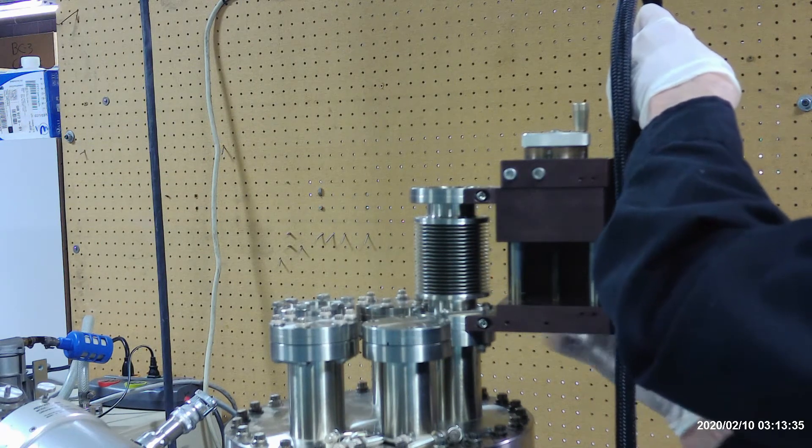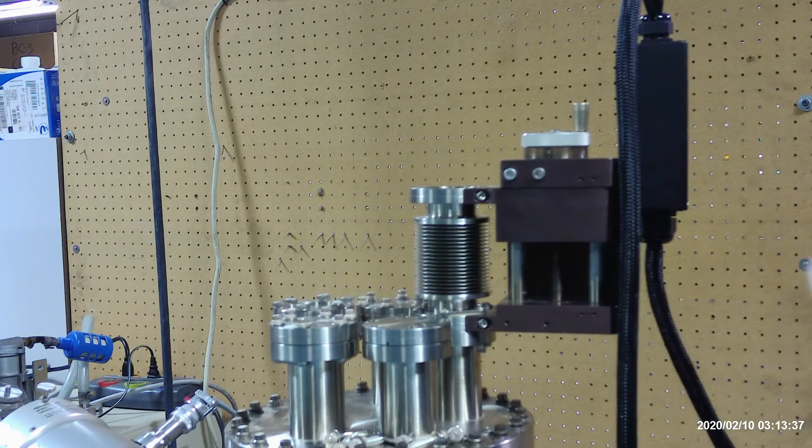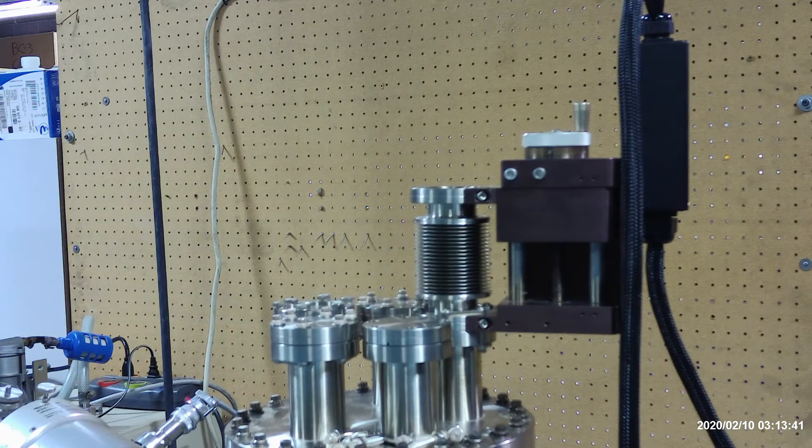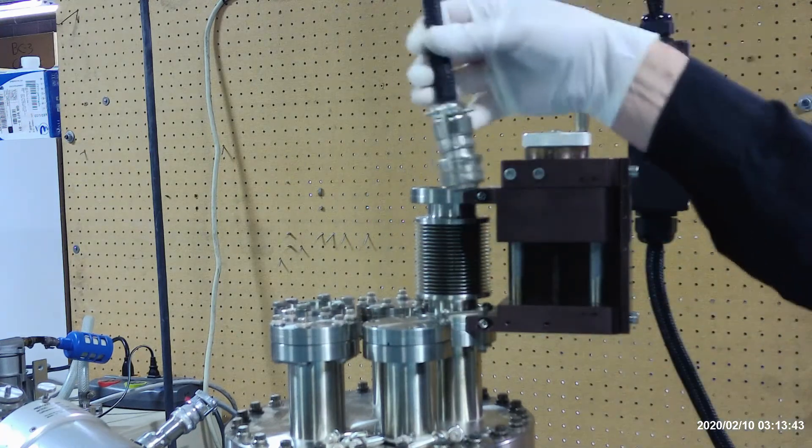I'm tightening the bolt on the back. Now the preamp is attached to the Z-Translator. That's nice because it relieves the strain off this cable.